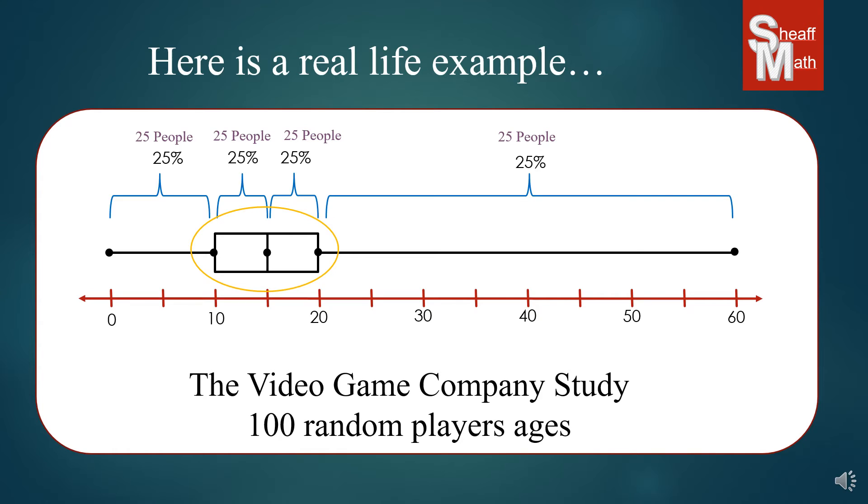Maybe they'll put advertisements on channels that they watch on television. Maybe they put ads on YouTube videos that kids in that age group use. So by looking at the most concentrated, smallest length of boxes, you can find out where the most people are in that survey.